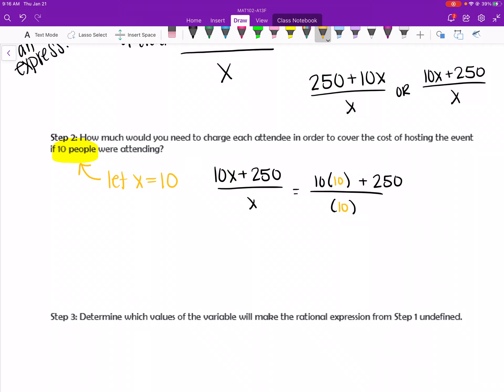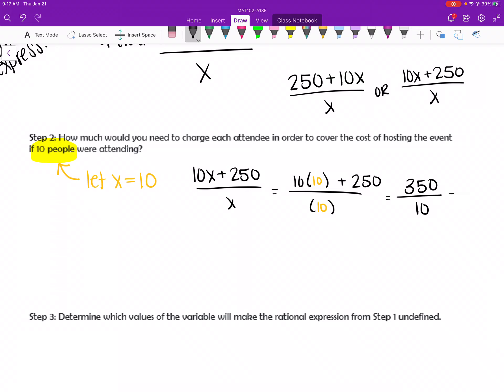Now remember, I have to do the whole numerator first. So I'm just going to type that into my calculator. You can use order of operations. So I've got 10 times 10 is 100 plus 250 gives me 350 over 10. And so I'm going to divide 350 divided by 10, which is going to give me 35.